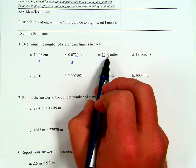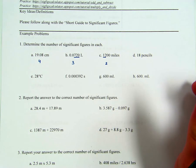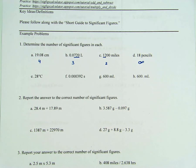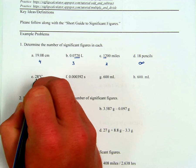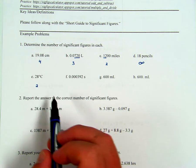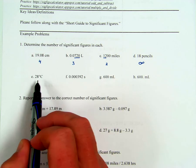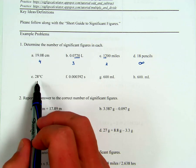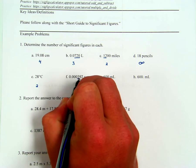Question D: 18 pencils — we would count pencils, not measure them, so that's infinite sig figs. Question E: 28 degrees Celsius has two sig figs — both non-zeros. You can't count degrees Celsius; you have to measure it. Question F has three sig figs: the 3, the 9, and the 2 — leading zeros are never significant.